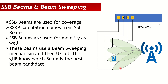Say we have a UE located in the cell. When the first beam comes, the UE measures it and gets an RSRP value. Because this beam isn't directed at the UE, the RSRP might be low — say minus 100 dBm. The second beam, which is centered on the UE, gives a higher RSRP of minus 90 dBm. The third beam gives minus 100 dBm, and the fourth, further away, gives minus 105 dBm.